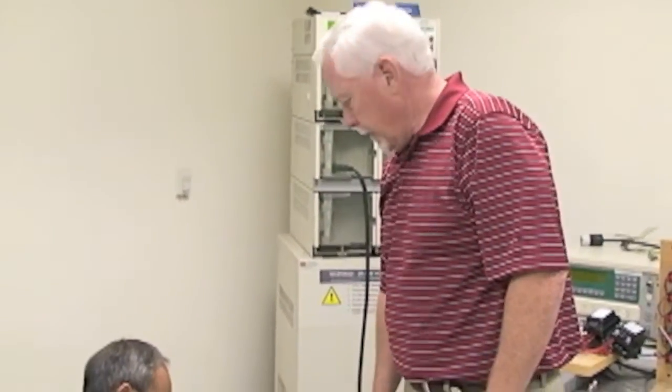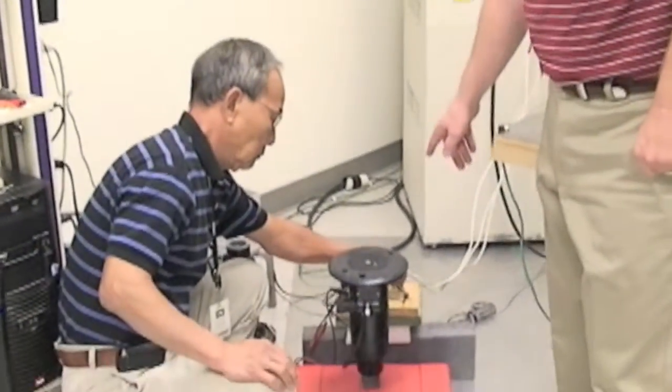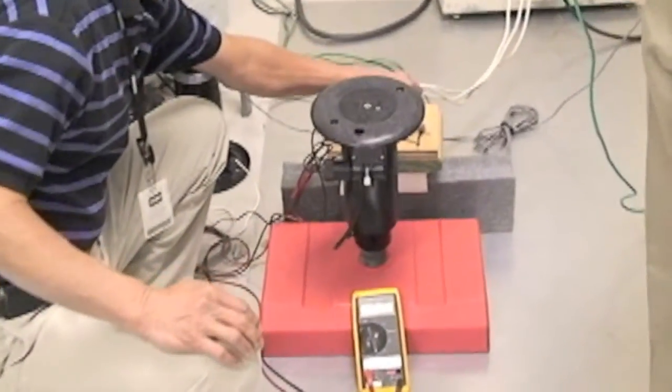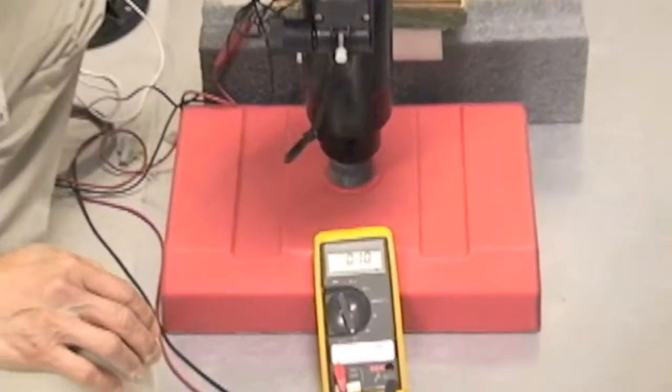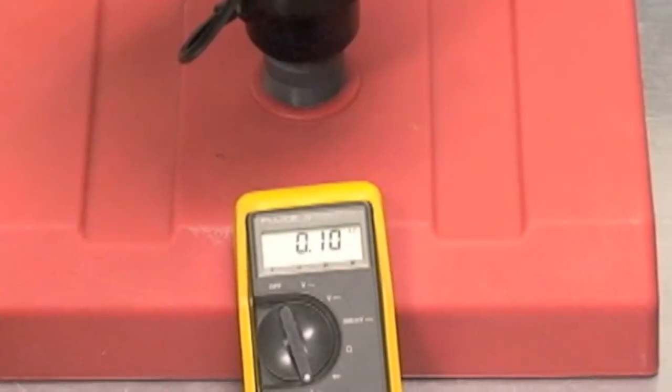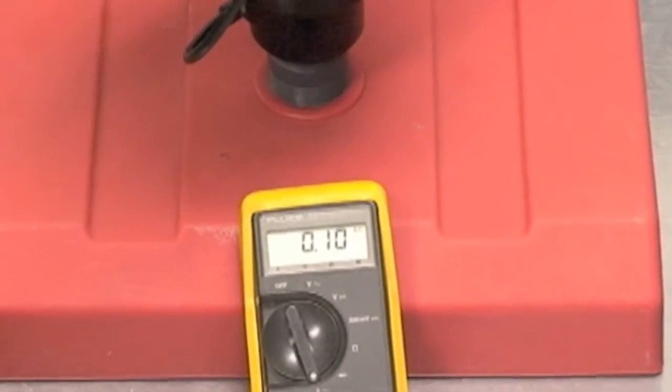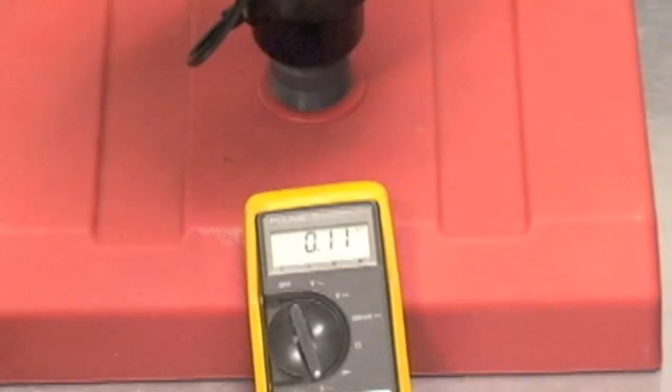Okay. So after being subjected to four 20,000 volt lightning strike simulations we're now applying 24 volts across the solenoid and you can see that we have the exact same current draw of 0.1 amp as we got prior to the test.